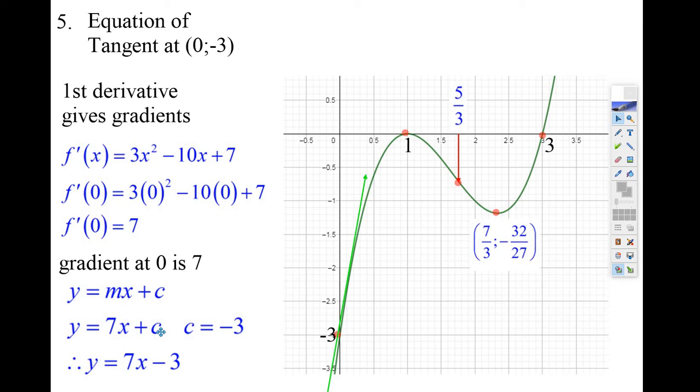But hang on. Isn't c the y-intercept? Well, it is. And hey, that is the y-intercept. For this line, it's cutting y at minus 3. So c must just be minus 3. Now, normally, you might have a point and you can substitute it in for x and y and figure out what c is. But we're looking what c is. Well, there's the equation of the line.